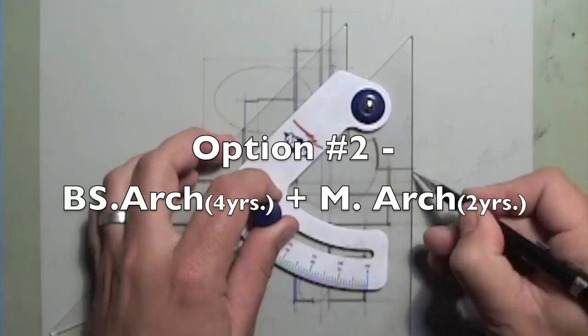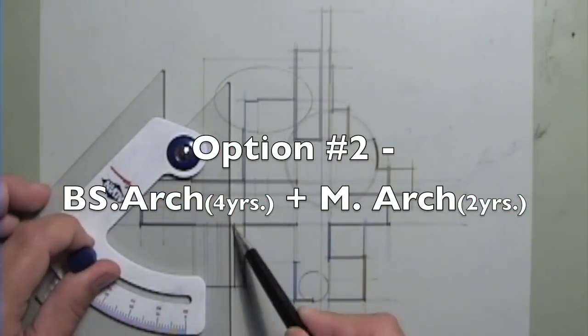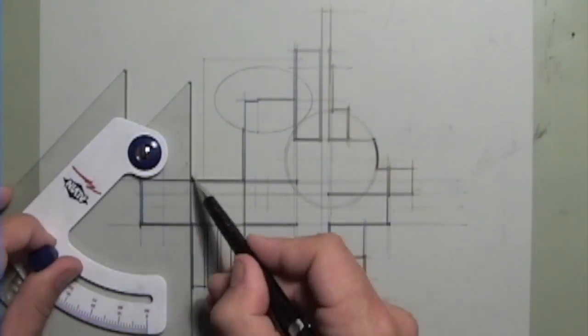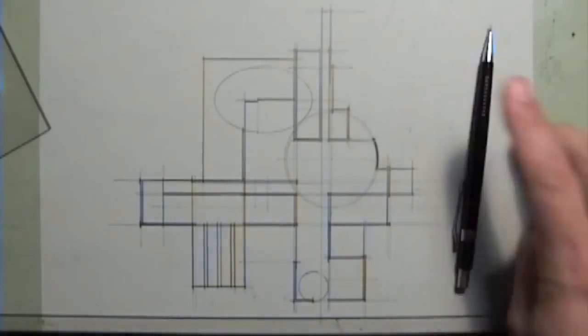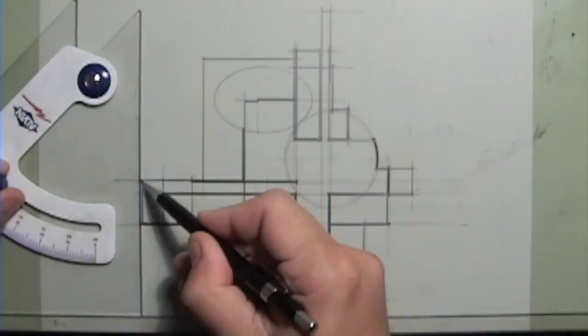Your second option is to get a pre-professional degree, which is typically a four-year program, but you won't be eligible for licensure with this degree. You must then go on to get your Master's degree, which is typically another two years, for a total of six.